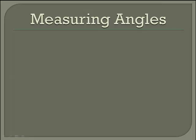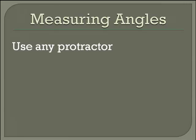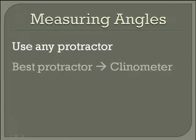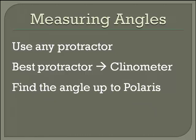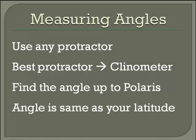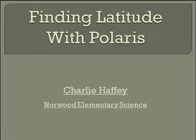When you're measuring angles, you want to use any kind of protractor. But the best protractor is the clinometer that you can get from the website. Find the angle up to Polaris — look over the top of your clinometer at Polaris and trap the string against it. The angle that you measure is the same as your latitude. This was known by ancient astronomers and ancient sailors throughout the world. Finding latitude with Polaris — my name is Charlie Haffey.